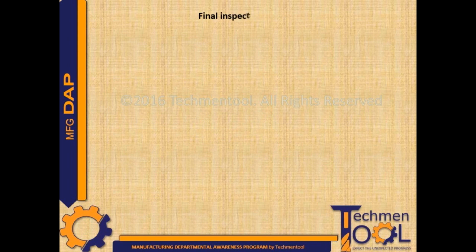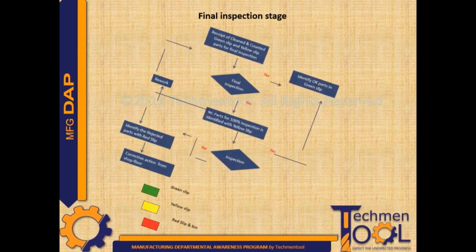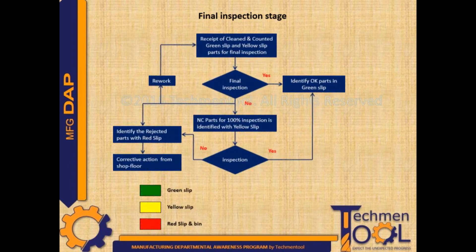This is the process flow chart for NC handling at the final inspection stage. Here, decided OK parts are identified with a green slip. Under 100% inspection, deviated parts are identified with a yellow slip, and rejected parts are identified with a red slip. Finally, disposal of red slip NC products is carried out.